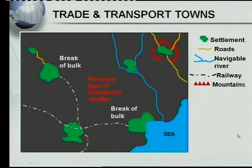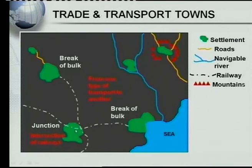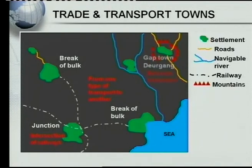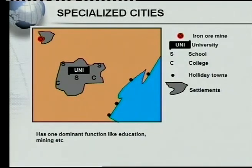The second trade and transport town is a junction, found at the intersection of railways — the SAR in our country is an example. Junctions also occur where navigable rivers join, and you will always find a settlement there. The third is a gap town, found between mountains. Worcester in the Western Cape is an example of a gap town.